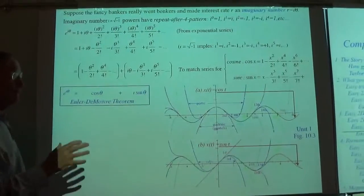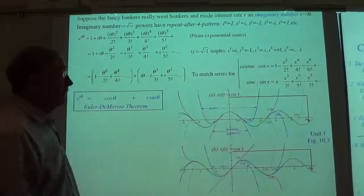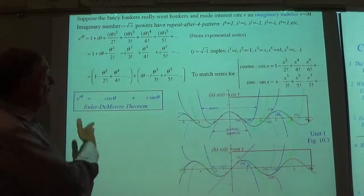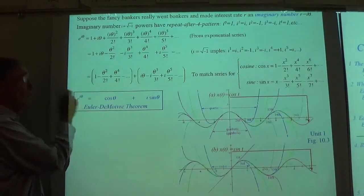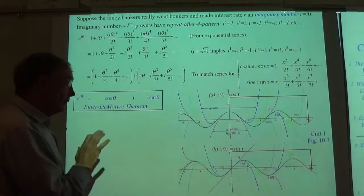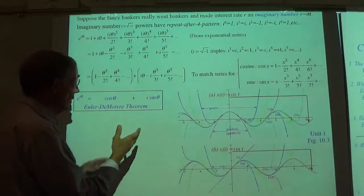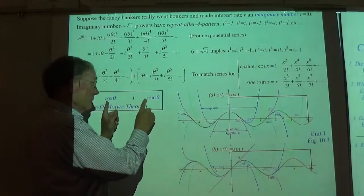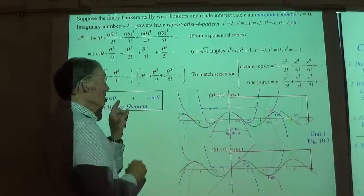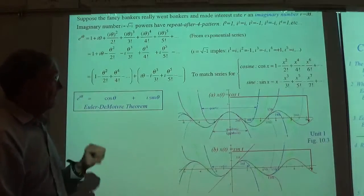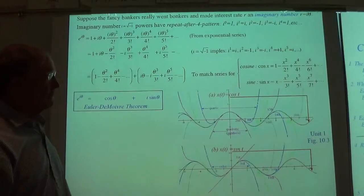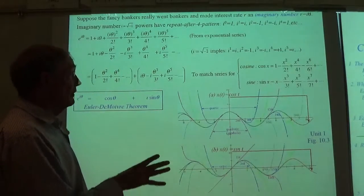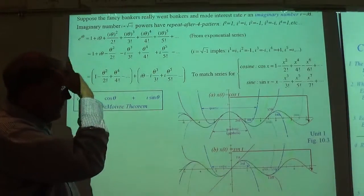This Euler theorem is going to be behind just about everything we do. The generalizations where we have spinner operators are also important — it will actually have four numbers, not just two. But real and imaginary is enough to get us started with interesting mechanics, field theory, and all of that.